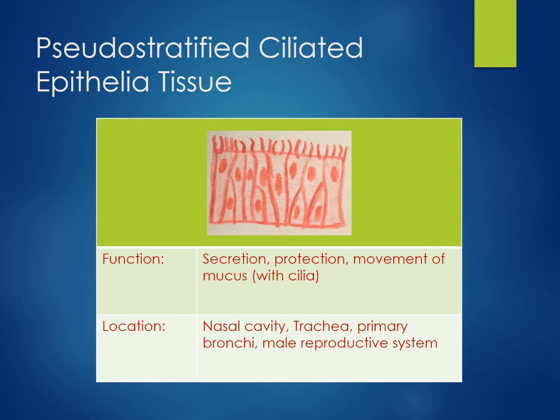This epithelium has two unique characteristics: goblet cells and cilia. Goblet cells secrete mucin. Mucin mixed with water will then form mucus. Lots of tiny cilia act together to filter the air by trapping and sweeping away debris. This serves as protection for the respiratory system.